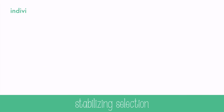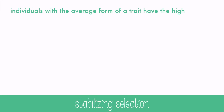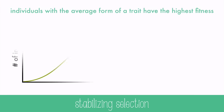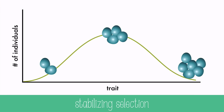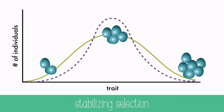In stabilizing selection, individuals with the average form of the trait have the highest fitness. For example, in robin's eggs, a clutch of four eggs is best. Because too few, and there might not be any that survive; too many, and they may be too hard to feed and sustain. So four is the best balance.